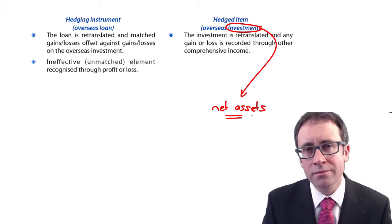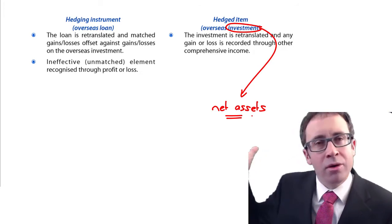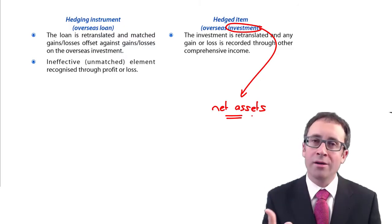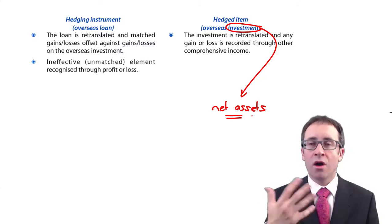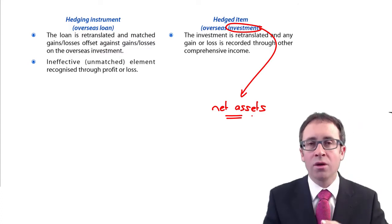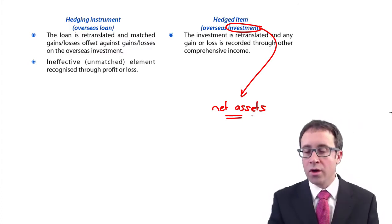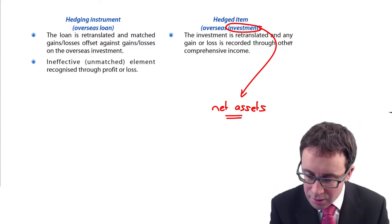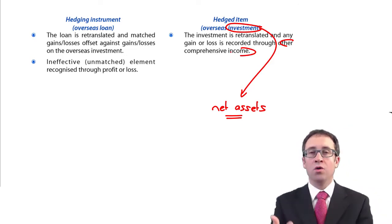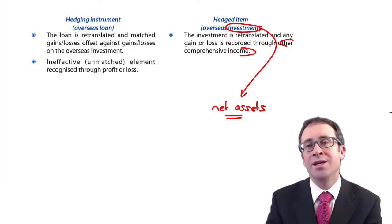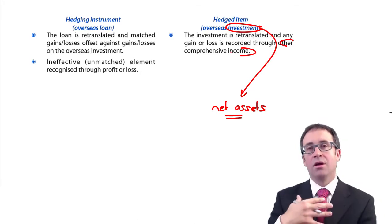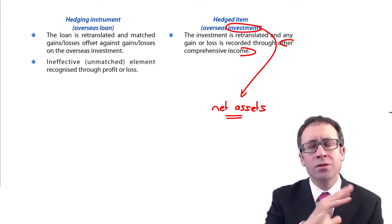Can you remember where those overseas gains and losses on translation of the overseas subsidiary went? Not through profit or loss — they went through other comprehensive income. So any gains and losses on your overseas investments and the overseas net assets of the subsidiary go through other comprehensive income.